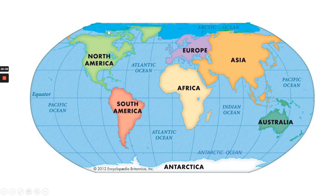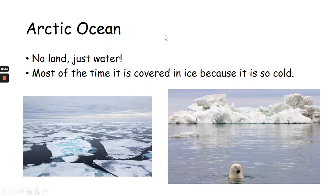Now you need to look at the top of the map, because now we're talking about this ocean. This ocean here is the Arctic Ocean. It's a very cold part of the world. There isn't any land there, so it isn't a continent. But there is quite a bit of ice. The Arctic Ocean — there's no land, it's just water. But most of the time it's covered in lots of ice because it's so cold. This is the part of the world where polar bears live.